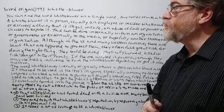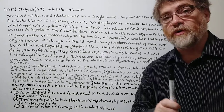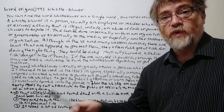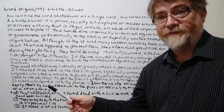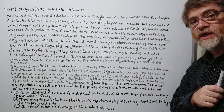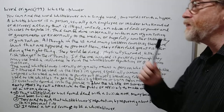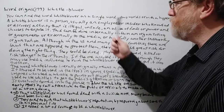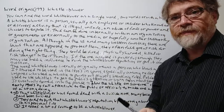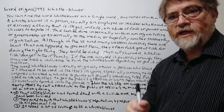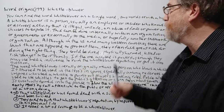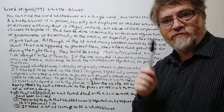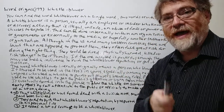Hi, this is Tutor Nick P and this is Word Origins 177. The word origin today is whistleblower. If somebody wants a screenshot, now's a good time. You can find the word whistleblower as a single word, as two separate words, or as a word where it's separated by a hyphen.